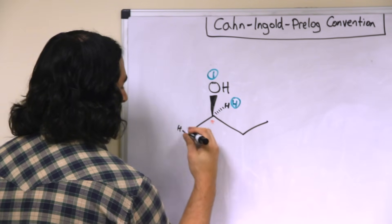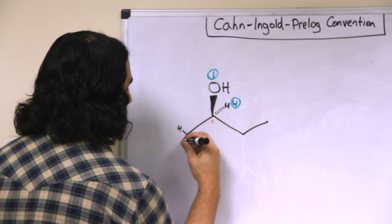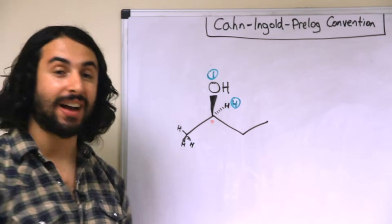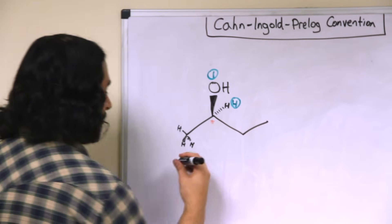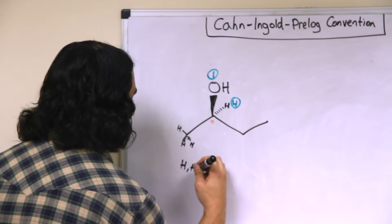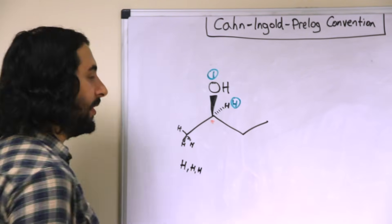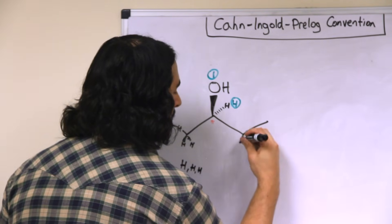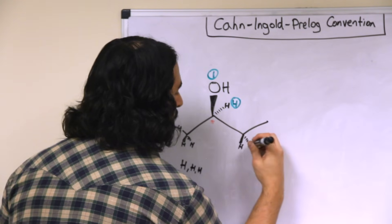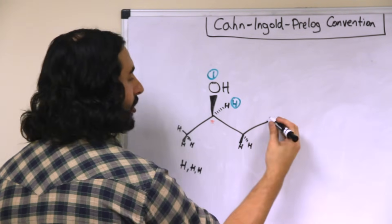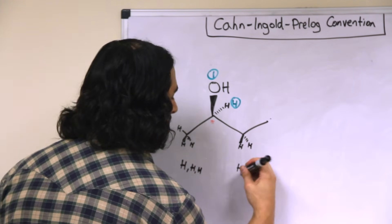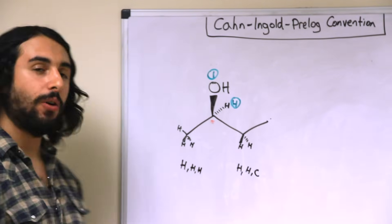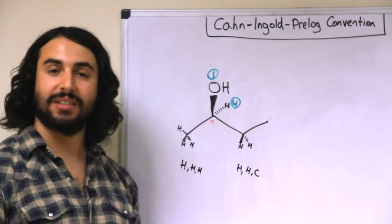This carbon atom happens to be bound to three implied hydrogen atoms — so that's H, H, H. This other carbon atom is bound to two implied hydrogen atoms and a carbon atom — so H, H, C.